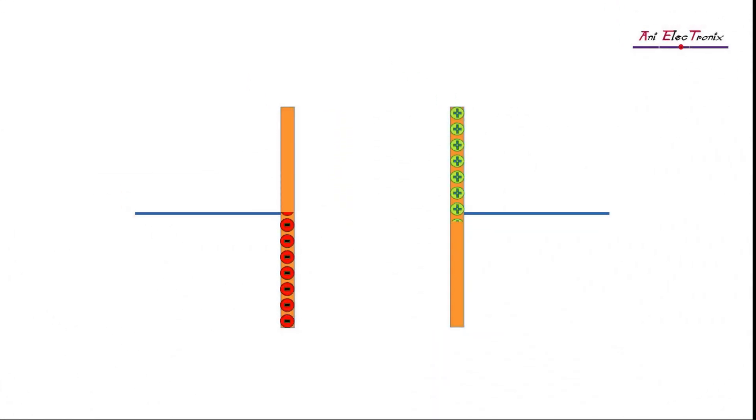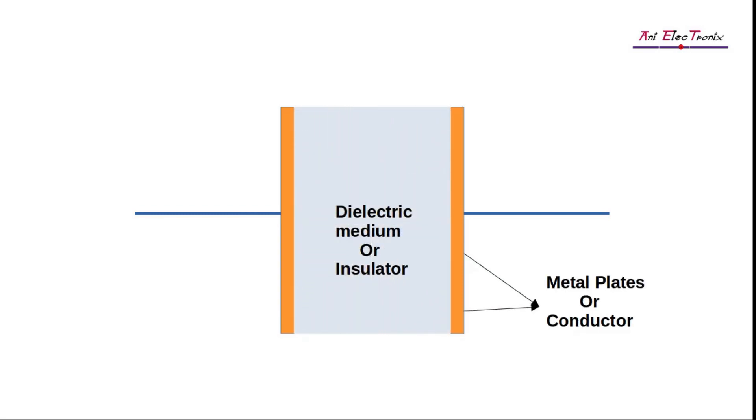In electrical terms, a capacitor is a device that can store electrical charges in the form of an electric field. There are two parallel metal plates in a capacitor, separated by a dielectric or non-conductive material. The dielectric material does not conduct electricity.